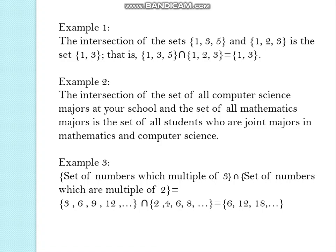Example number 3. Set of numbers which are multiple of 3 and set of numbers which are multiple of 2. Both of them are countably infinite sets. So if you write the first set in the roster method the members are 3, 6, 9, 12 and continue. The multiples of 3 and the second is multiple of 2. So it is 2, 4, 6, 8 and continue.